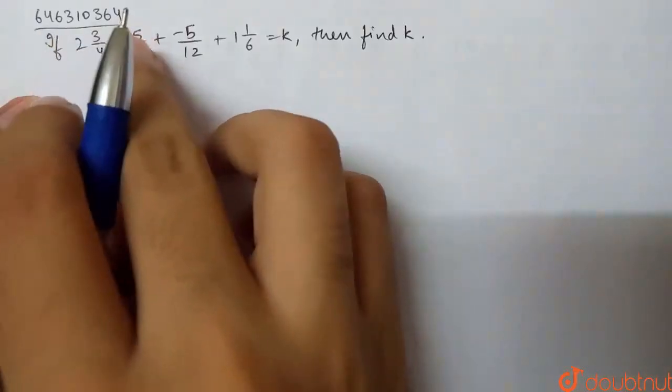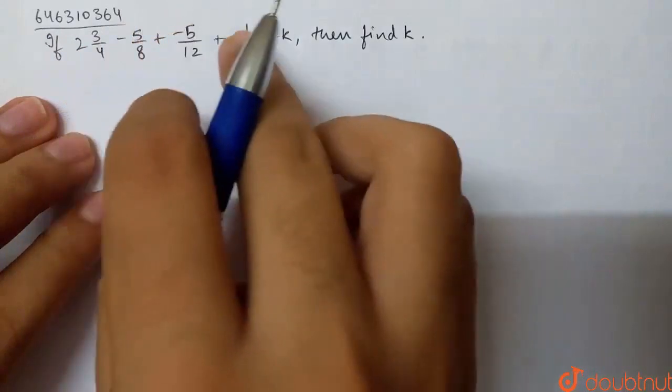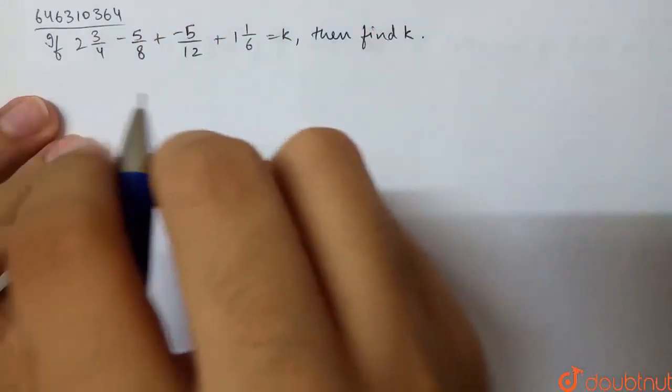Next question is: if 2 3/4 minus 5/8 plus minus 5/12 plus 1 1/6 equals k, then find k.